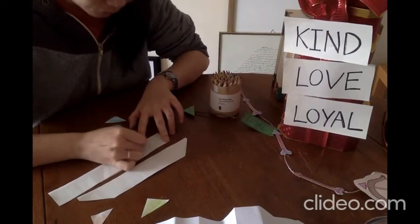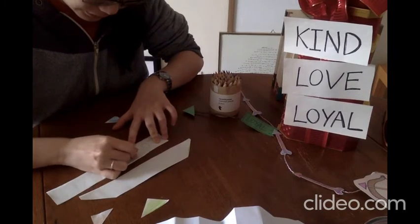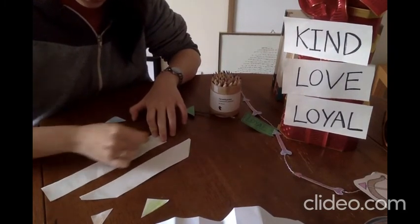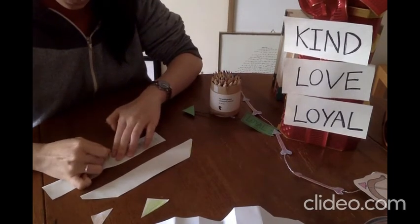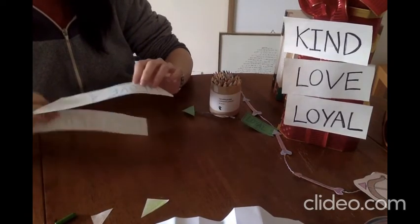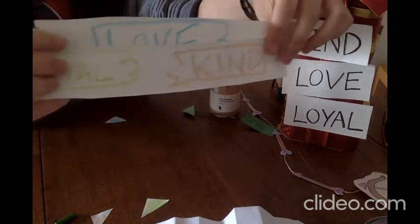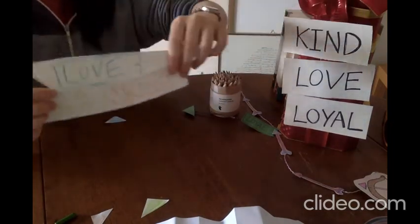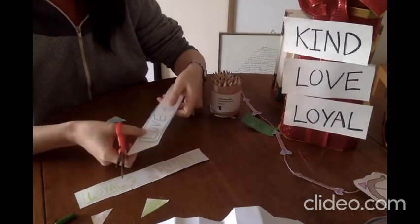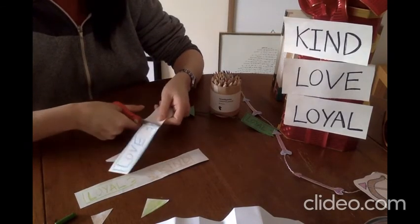These will be our tails of our arrows. I'm going to show you one as an example. And you should have your words like this. And after you've done that, all you have to do is cut your tips of your arrows and then we will assemble our arrows.